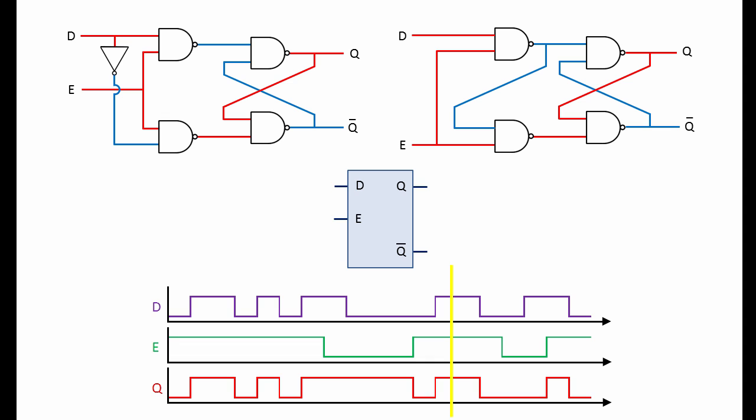D latches are useful for converting parallel data into serial data. A group of D latches can hang on to several bits of data, while a multiplexer accesses them one at a time and places them onto a serial transmission line. Typically, D latches are found in input-output ports.